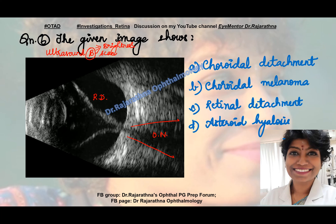Now let us see the options. Choroidal detachment — choroid usually does not have this attachment at the optic nerve. The attachment at the optic nerve gives a clue that it is retinal detachment. Moreover, when you have choroidal detachment, beneath the detachment you will have a very homogeneous effusion — that fluid very commonly. The choroid also will be very smooth and dome-shaped. This one is not that smooth, so these are points that go against choroidal detachment.